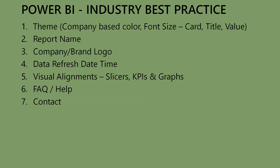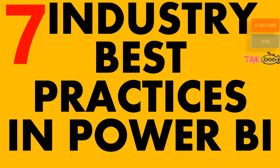So these are the seven best practices. First is the theme, which includes company-based colors and font size for card titles and values. Then the report name, company or brand logo, data refresh date and time, visual alignments for slicers, KPIs and graphs, FAQ help icons, and contact information. These are the seven important best practices of big companies.